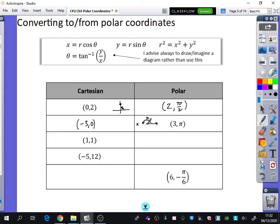What about (1, 1) in Cartesian? It's going to be this point up here that is 1 across, 1 up. √2, π/4.